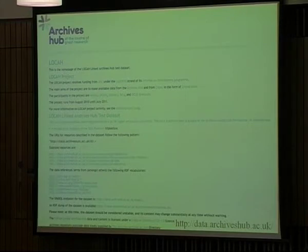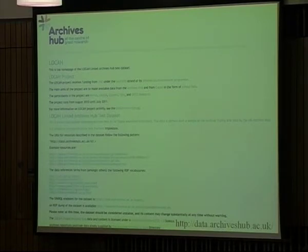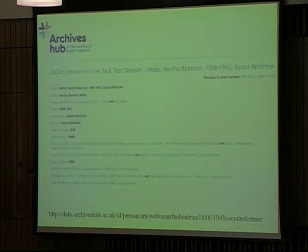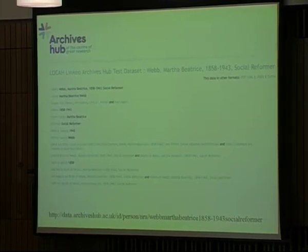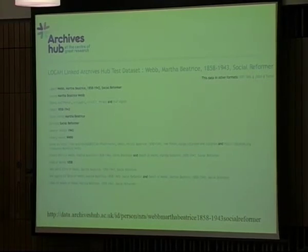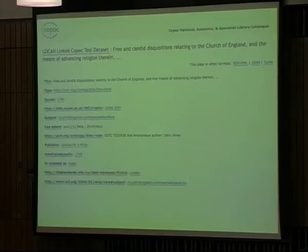That's our Archives Hub data website — data.archiveshub.ac.uk — where you go for the linked data for the archival stuff. There's a SPARQL endpoint, some example resources, and you can get a download of the data. It's Creative Commons Zero, so it's completely free. The main point to note is that URI at the bottom: if you access it as a machine, you'll get RDF. You can also get this data in JSON and Turtle form, as well as a fairly basic browser-based view.